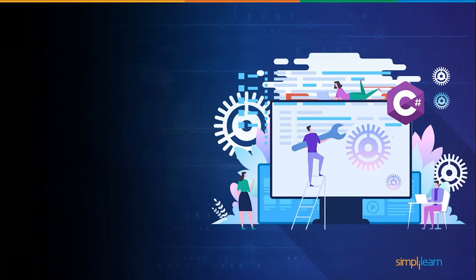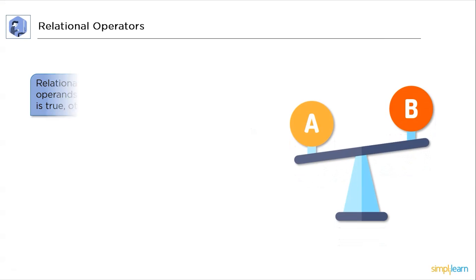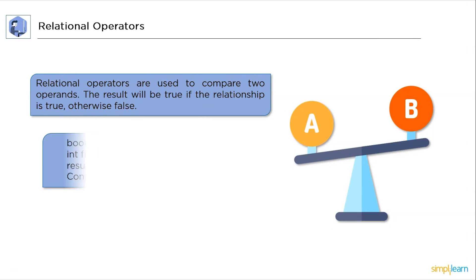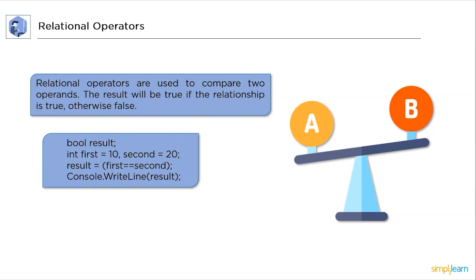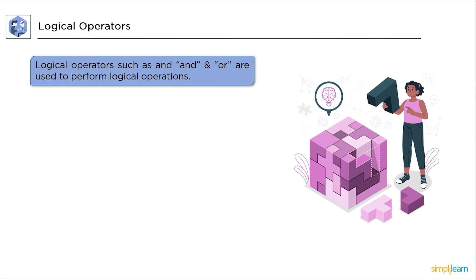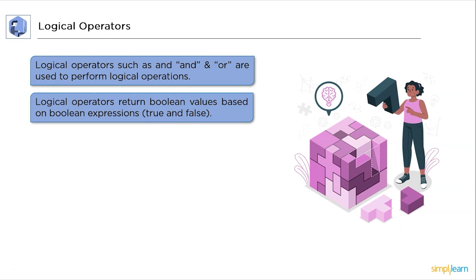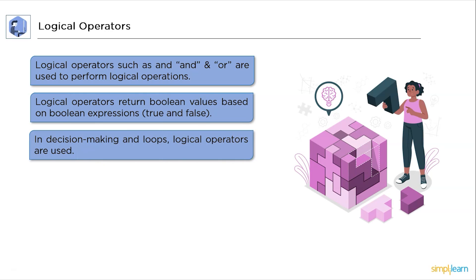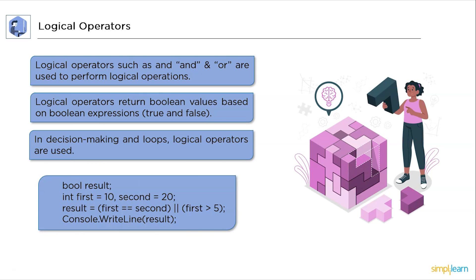Next, relational operators. When comparing two operands, the relational operators are used. If the relationship is true, then the result will be true; otherwise, it will be false, and here is the syntax for that. Then logical operators — to perform logical operations, logical operators such as AND and OR are used. Based on boolean expressions, they return boolean values true and false. Logical operators are used in decision making and loops, and here is the syntax for that.